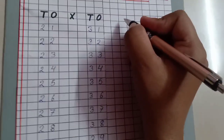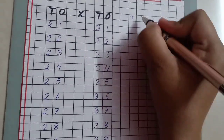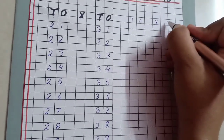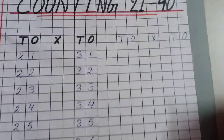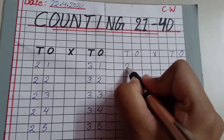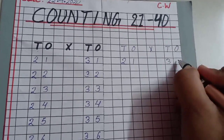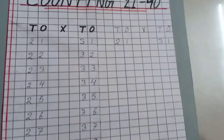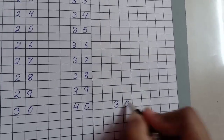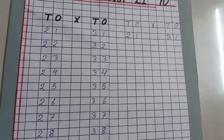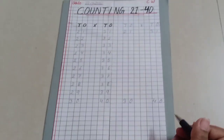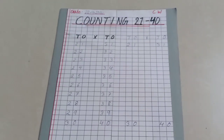Students, remember that you have to write the counting two times. Write T and O, put a cross, then write T and O again. Start writing from 21; the twos line ends at 30, and the threes line ends at 40. Complete your work this way in your maths copy, new or old.